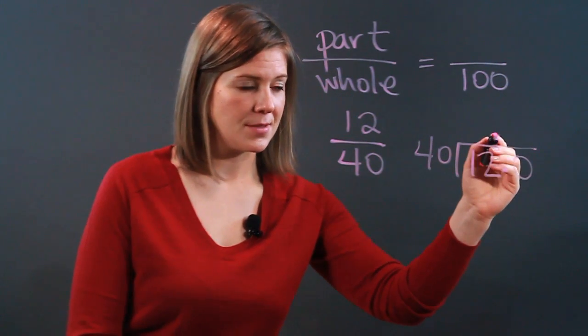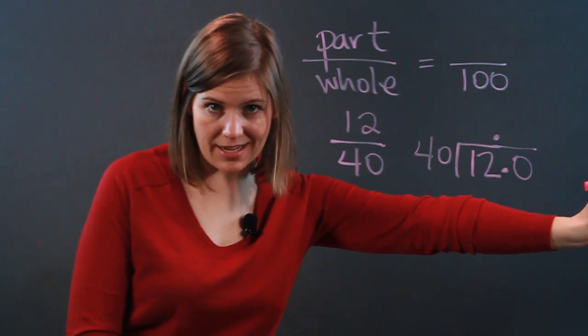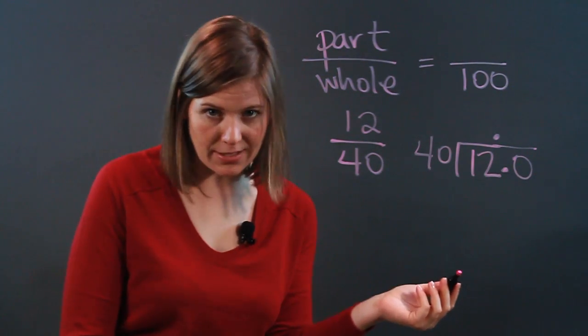When you put a decimal down, you put your decimal up here in your quotient as well, and then you can add as many zeros as you need. Because guess what? 40 goes into 12 less than one time.